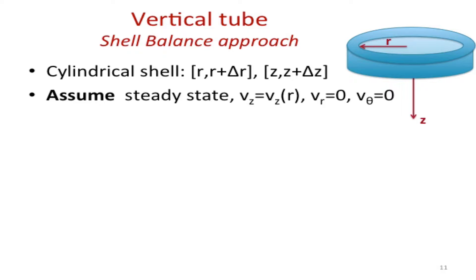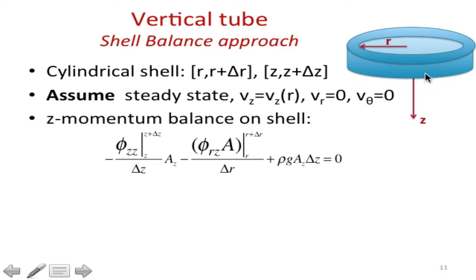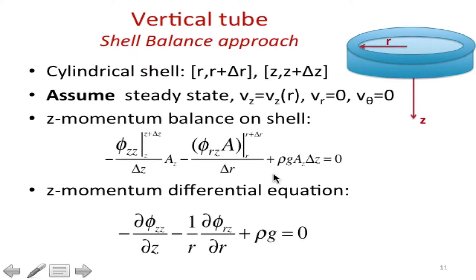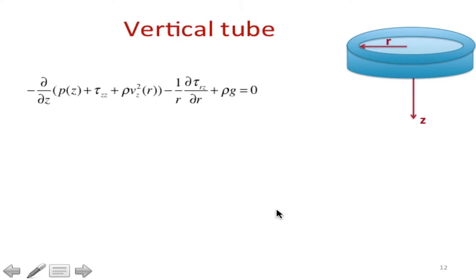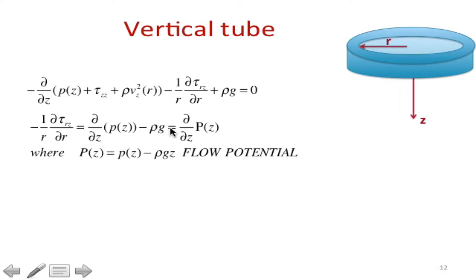Let's go through vertical tube first. I'll remind you of what this was when we were doing shell balances. We assumed steady state, we assumed that Vz is just Vz of r, and the other two velocities are zero. Then we did a z-momentum balance on this shell. After sending delta-z and delta-r to zero, it becomes a partial differential equation with the action of outside forces, which is rho-g.